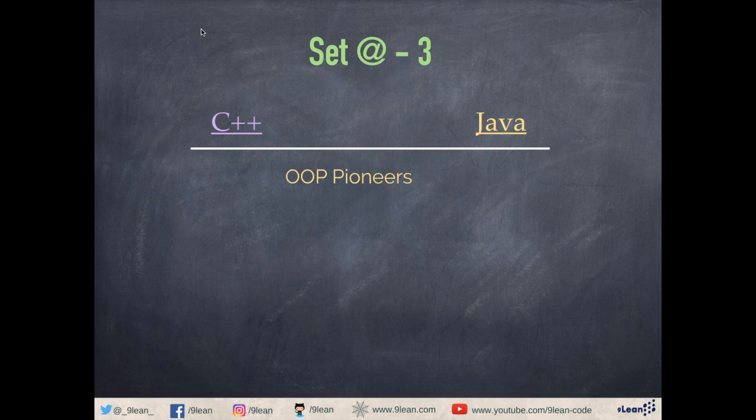They were the pioneers of object-oriented programming and have changed a lot in the last few years. With the arrival of C++11 and Java 8, we have functional programming capability in these two languages, which makes them as modern as any other languages.